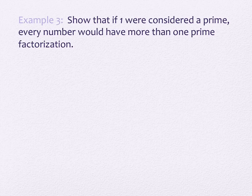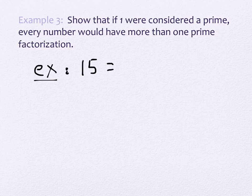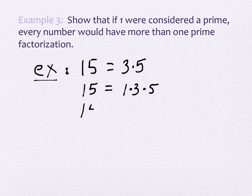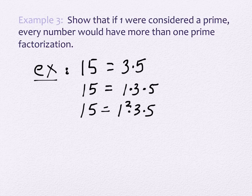It says show that if 1 were considered a prime number, every number would have more than one prime factorization. We're going to use example 15. What is the prime factorization for 15? 3 times 5. If 1 were considered a prime number, what would be another prime factorization? 1 times 3 times 5. And we could keep going in this way for infinitely many times. We'd have 1 squared times 3 times 5, 1 cubed times 3 times 5, and we could do this infinitely many times.